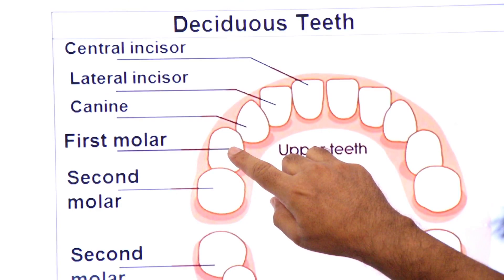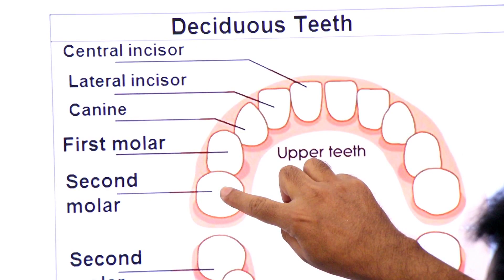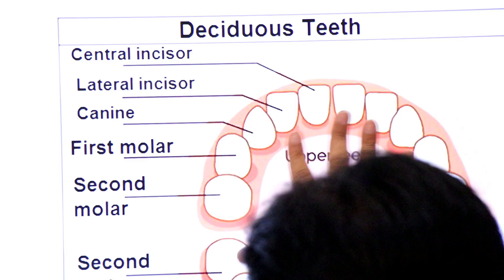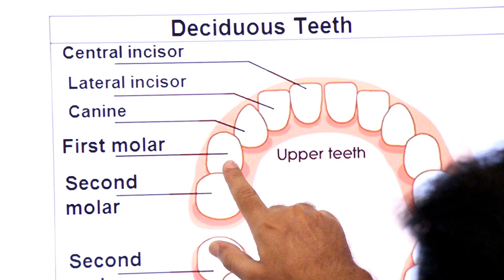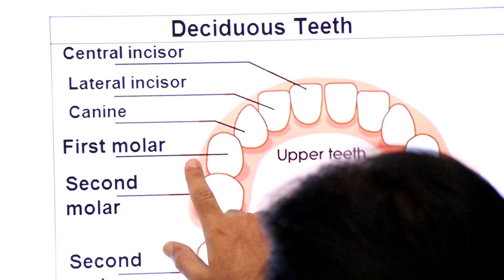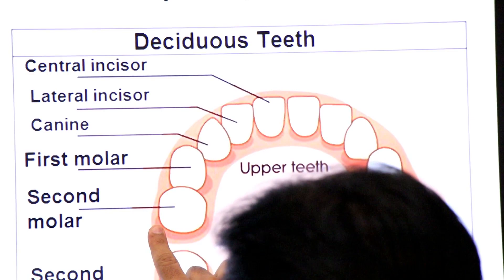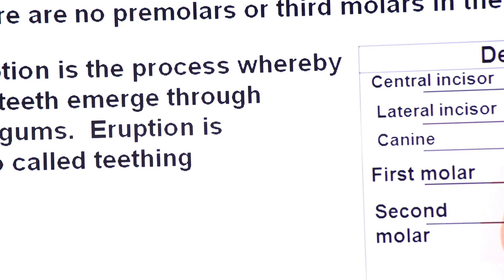Remember: in primary dentition there are no pre-molars or third molar wisdom teeth. Children have first molars and second molars. These deciduous teeth are precursors of permanent teeth — the child's first molar will be replaced by the first pre-molar, and the second molar will become the second pre-molar. There are no precursors of permanent molars in the primary dentition.